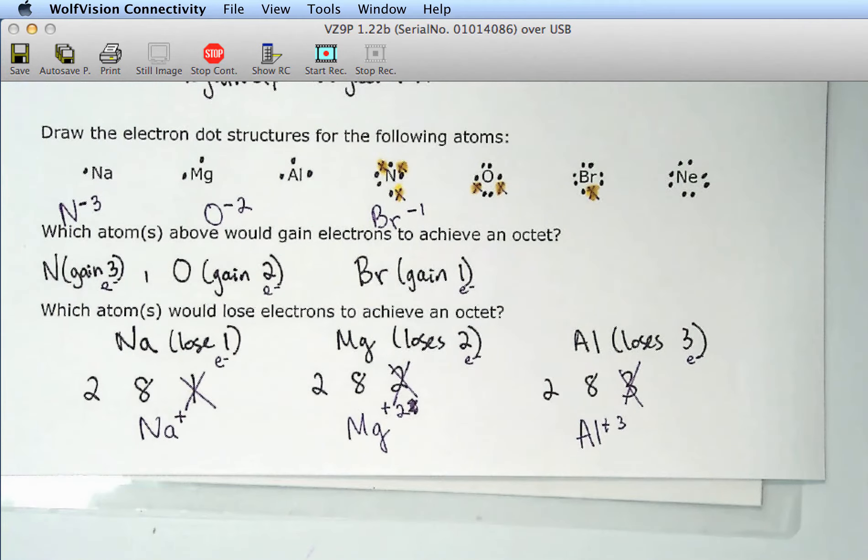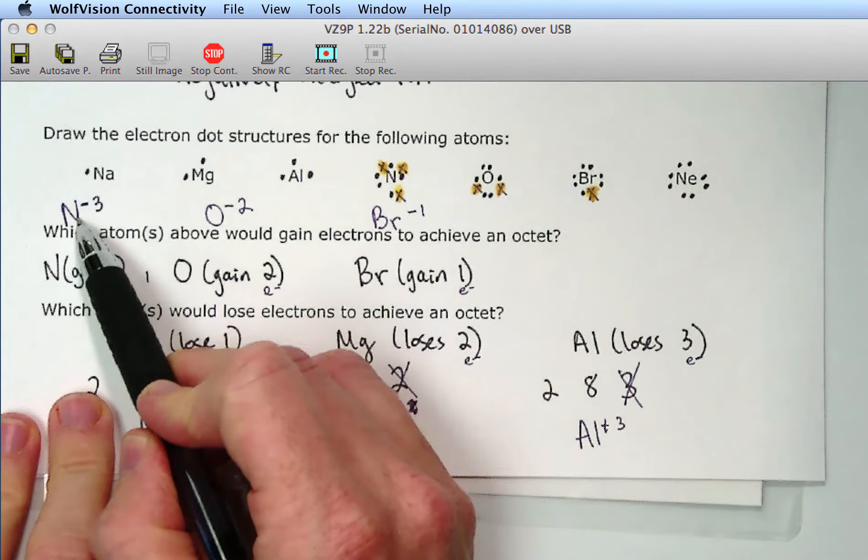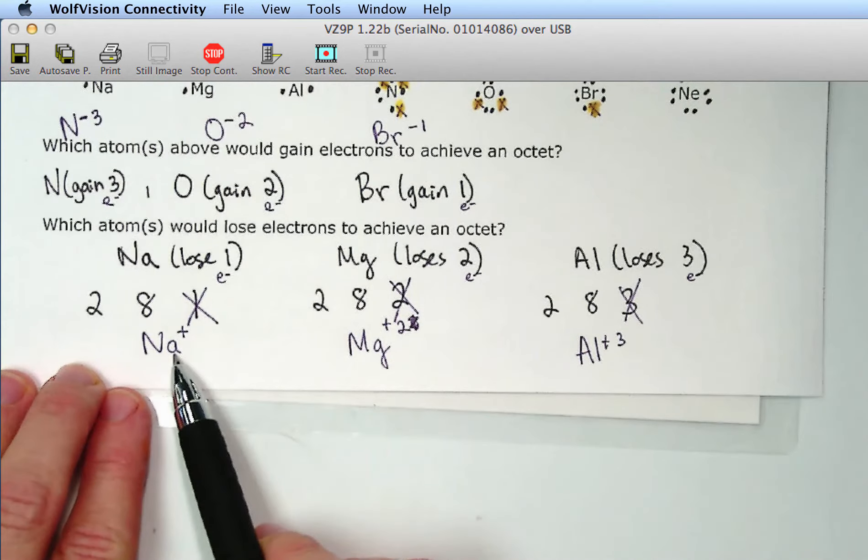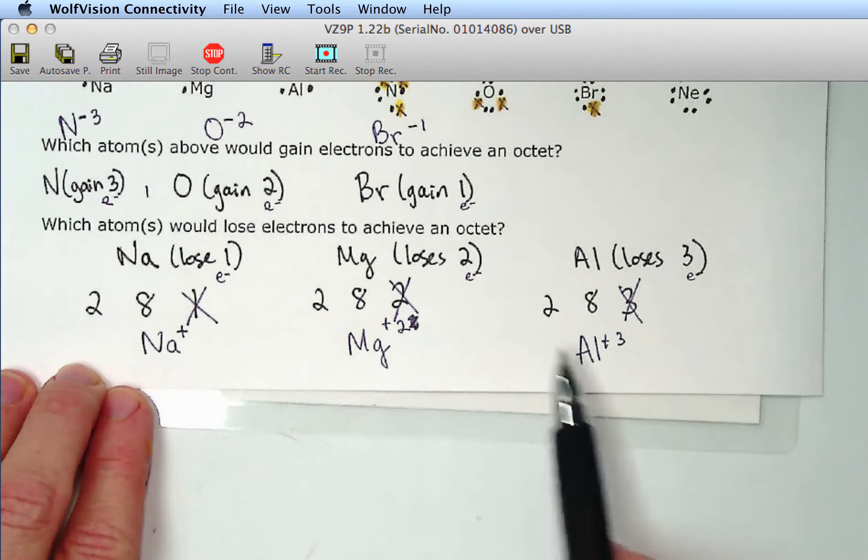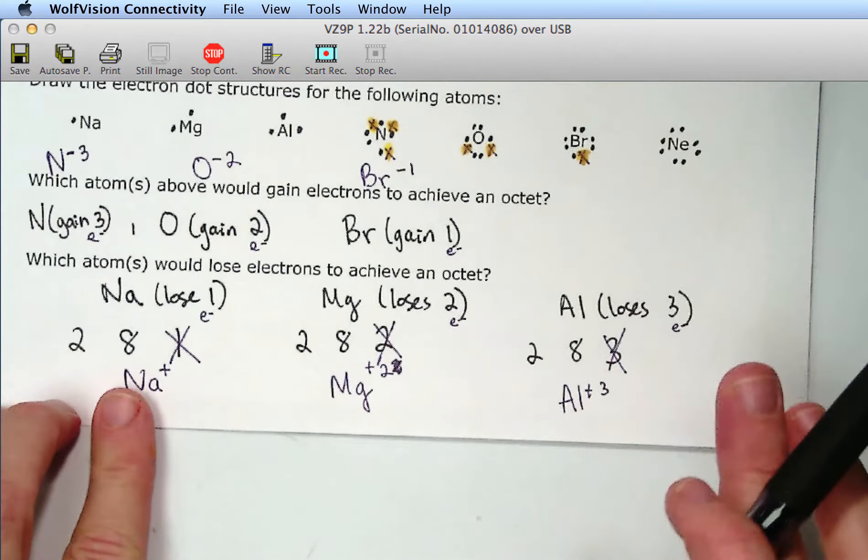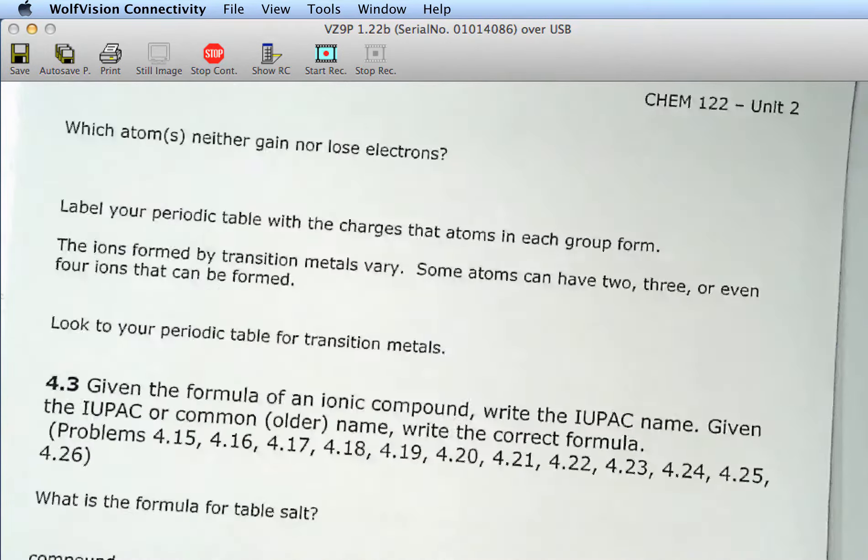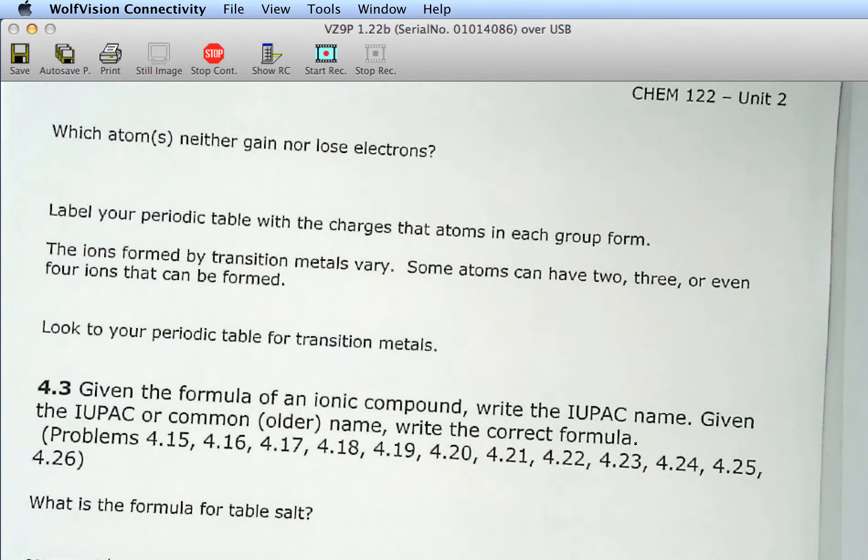And there is a way to distinguish these ions from the neutral atoms. And we'll learn about the nomenclature for that. But, I'll give you a preview. This is nitride ion. This is oxide ion. This is bromide ion. Sodium ion. Magnesium ion. Aluminum ion. So, on the next page, I have a question. Which atoms, neither gain or lose electrons? We answered that early on. That was neon. Because it has eight.